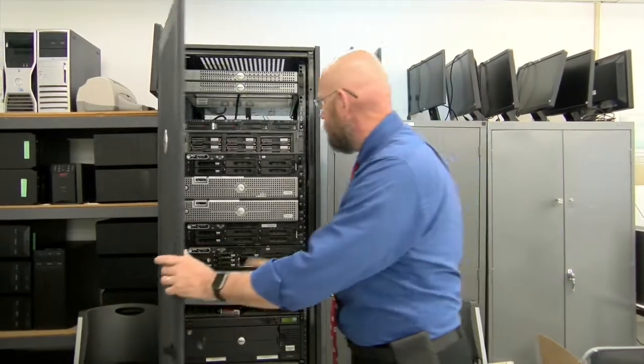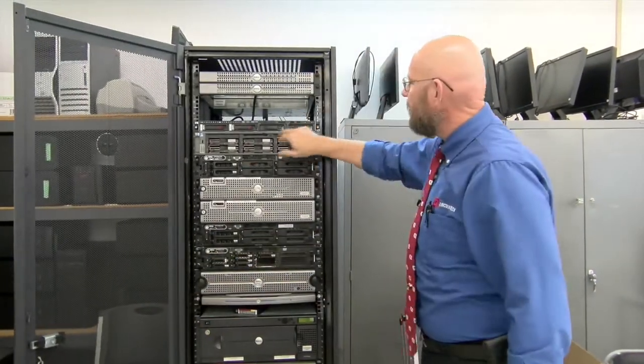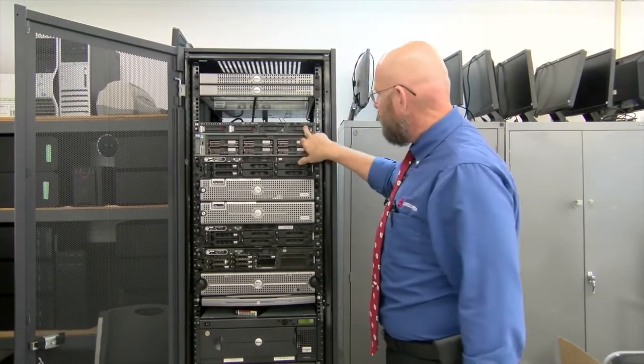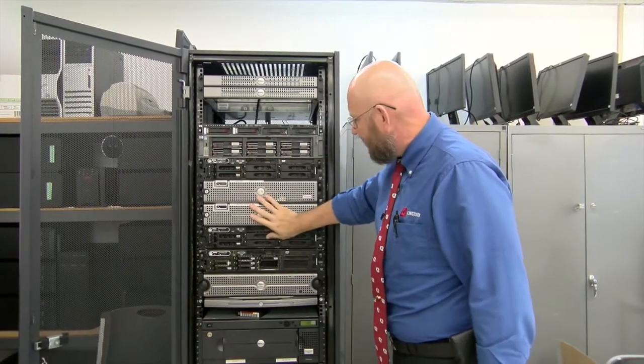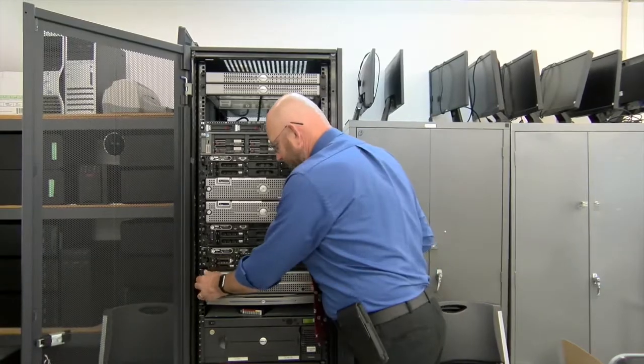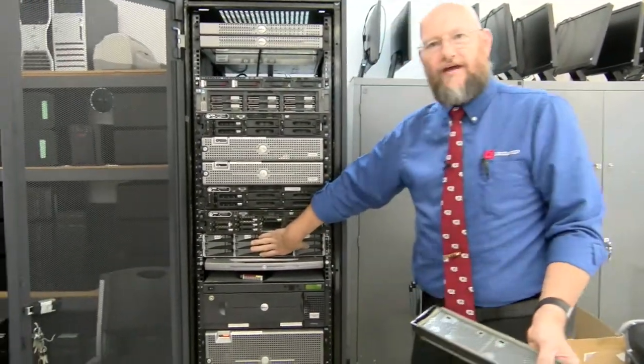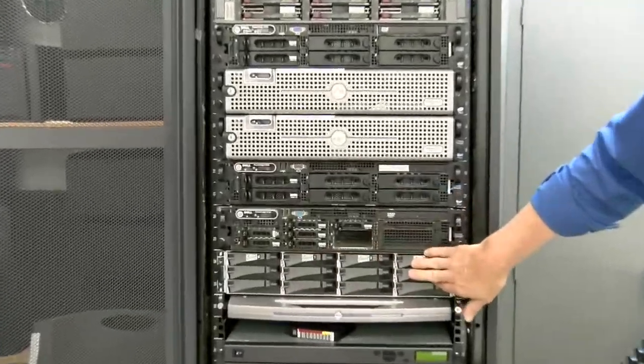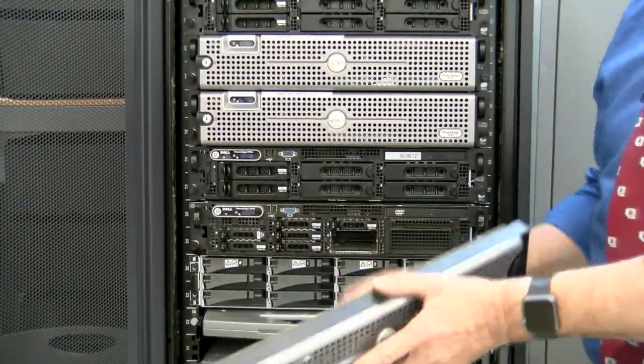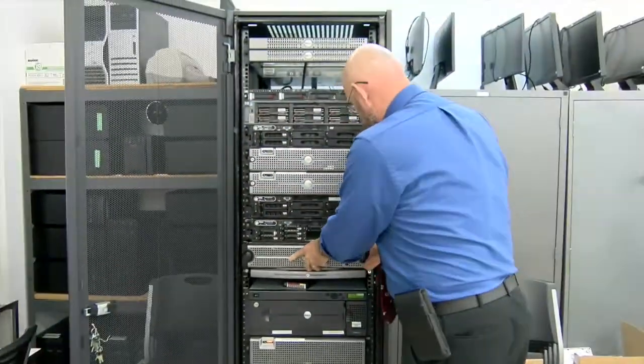So here we have a server rack. Here we have multiple servers, an HP server, another HP, and then a couple Dell servers. Here we actually have a SAN. A SAN is basically a storage array network, so this is a bunch of hard drives that work in the background of a server, that works in the background of a network.